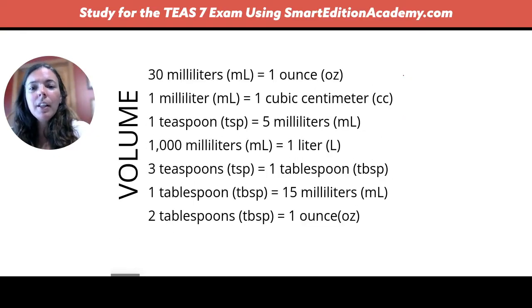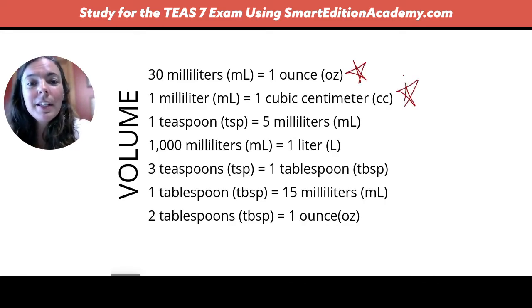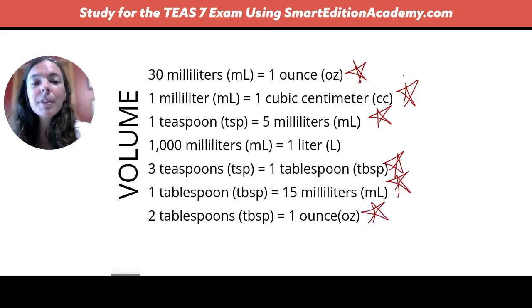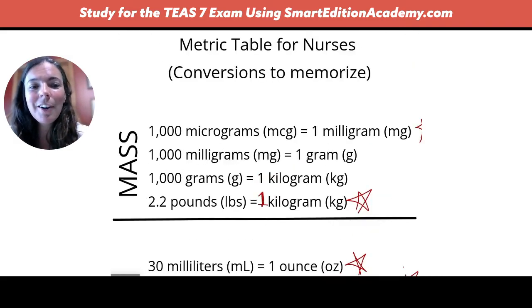So when we talk about volume, a lot of these are ones that we will need to memorize. So 30 milliliters equals one ounce. One milliliter equals one cubic centimeter or a cc. One teaspoon equals five milliliters. 1,000 milliliters equals one liter. That is one you could use the mnemonic for. Three teaspoons equals one tablespoon. One tablespoon equals 15 milliliters. And then two tablespoons equals one ounce. So notice with the volume, there are a lot of different units, so a lot of different ones we need to memorize. But I hope you find this table helpful and feel free to screenshot it so that you can use it as reference later on.